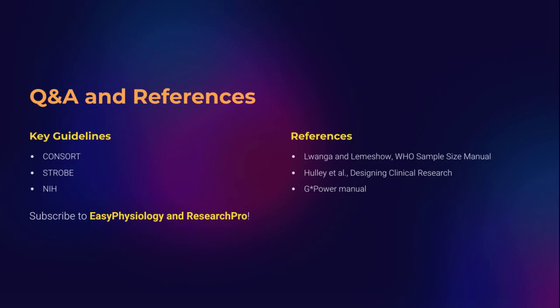Curious to explore more? Check out these gold-standard guidelines: CONSORT for clinical trials, STROBE for observational studies, and NIH guidance for sample size justification. Core references include: Luanga and Lemucho's WHO sample size manual, Hulley et al.'s Designing Clinical Research, and the G-Power software manual. These are not just footnotes — they're your roadmap to becoming a methodologically solid researcher. Read them, understand them, apply them.